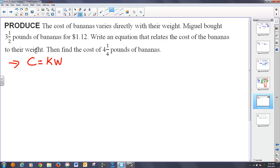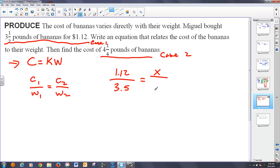Well what I could do is I could find the k value, solve, and then plug these problems back in or I can just set up a proportion. Here's my case 1 and then here's case 2. So in case 1 I know I'm going to have some c1 over w1 is equal to c2 over w2. So the cost is 1.12 over the initial weight of 3.5 and that should be equal to the unknown cost over the second weight 4 and a quarter pounds is 4.25.